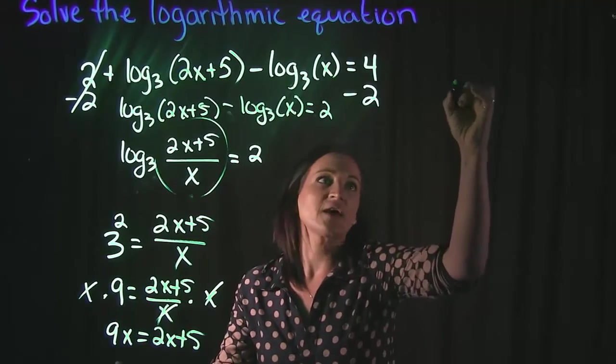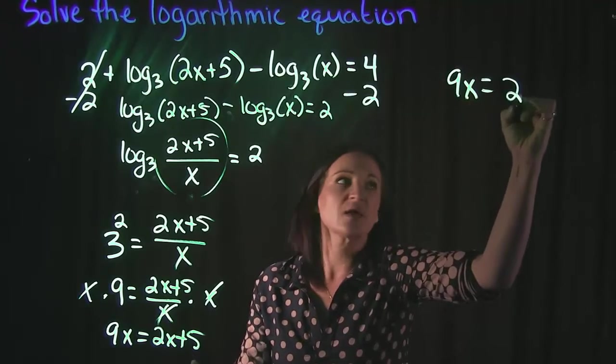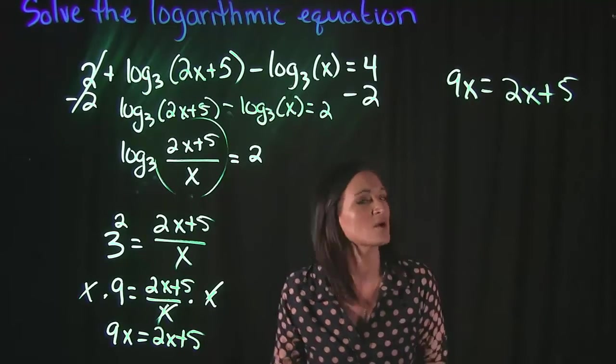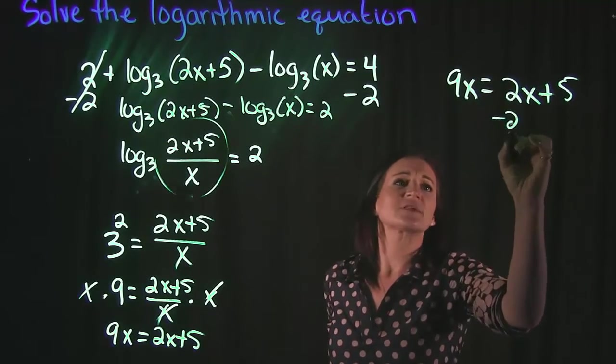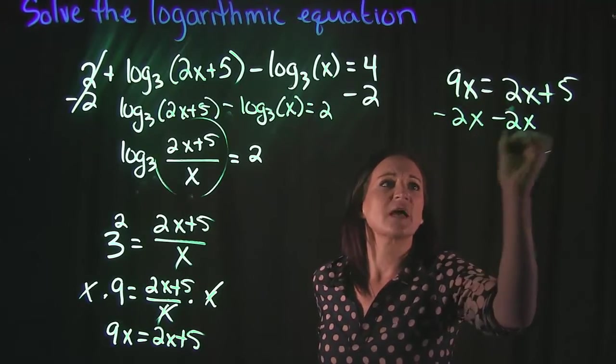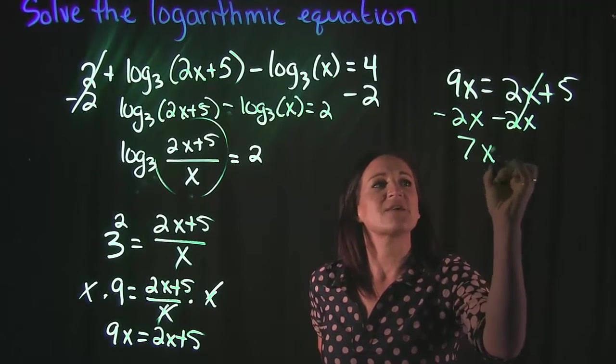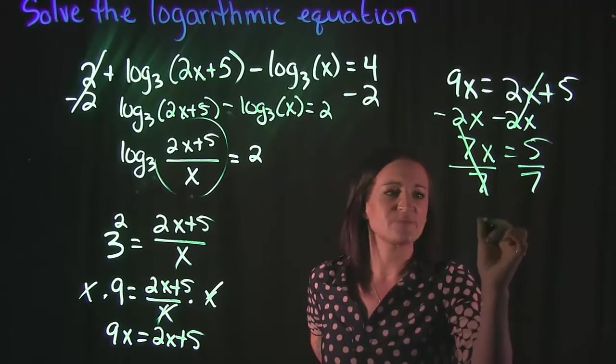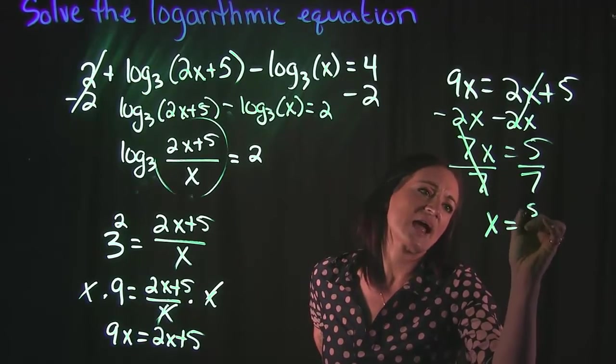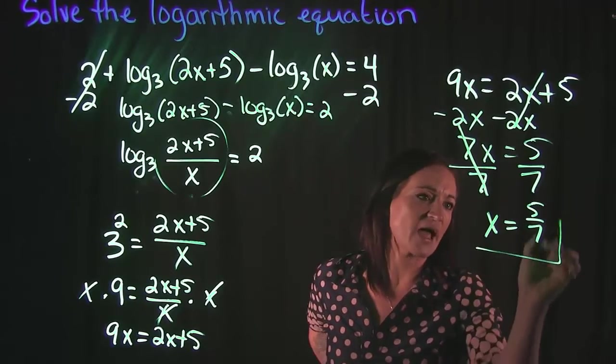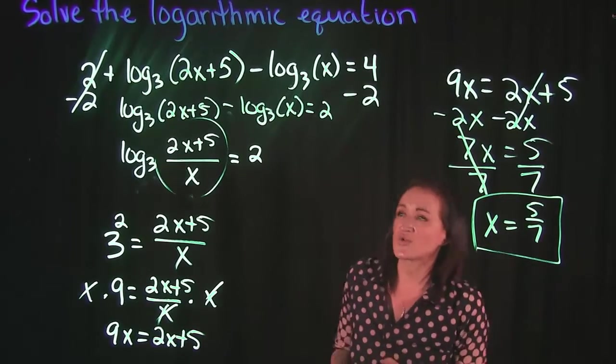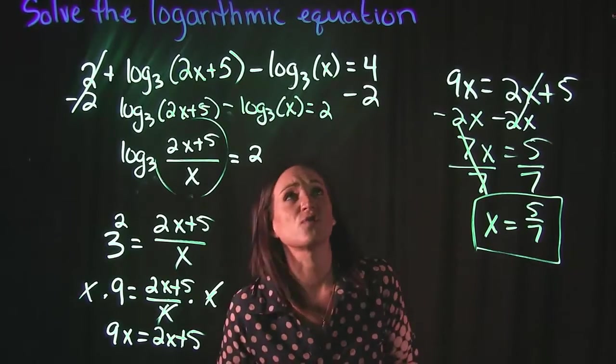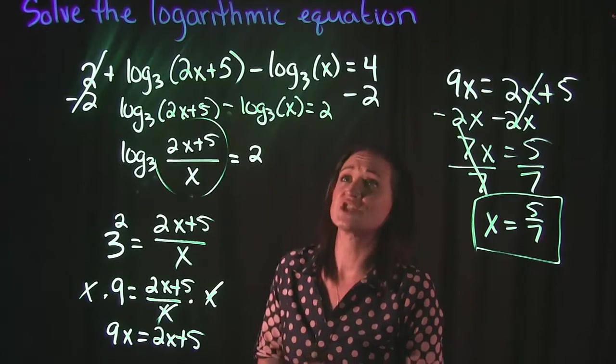And let me move that up over here so that we can wrap up this problem here. So solving for x, I'm going to subtract 2x on both sides. That's going to give me 7x is equal to 5. And we're going to divide both sides by 7, getting that x is equal to 5 sevenths. So that is our solution for the logarithmic equation here.